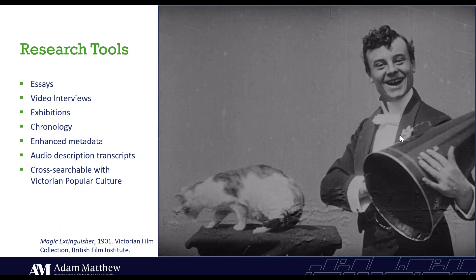The films will be accompanied by a selection of research tools within the resource. These features will place the films in their historical context, highlighting their significance and demonstrating their value for studying Victorian history and culture. We'll include a selection of essays and videos covering British cinema and film consumption, technology and special effects, gender and sexuality, an essay that will explore the absence of minority groups within these films, local film and cast, as well as case studies on using film as primary sources. Exhibitions will highlight key innovations, pioneering filmmakers and producers, and the early emergence of genre. The films will be enhanced with detailed metadata to ensure the films are as discoverable as possible, and each film will be accompanied by a time-coded audio description transcript as well.